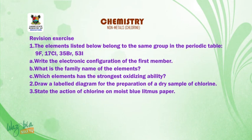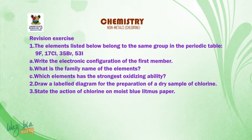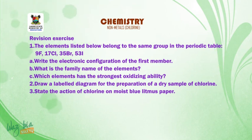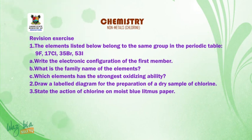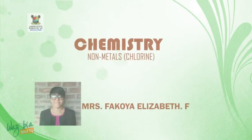Revision exercise. 1. The elements listed below belong to the same group in the periodic table: fluorine, chlorine, bromine and iodine. A: write the electronic configuration of the first member. B: what is the family name of the elements? C: which element has the strongest oxidizing ability? 2. Draw a labeled diagram for the preparation of a dry sample of chlorine. 3. State the action of chlorine on moist blue litmus paper. Thank you for listening and stay safe.